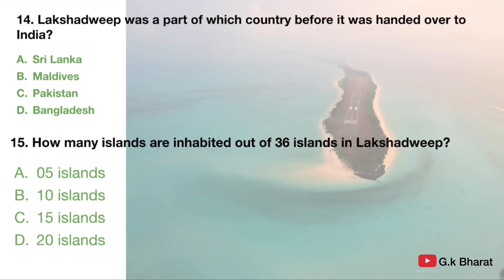Next. How many islands are inhabited out of 36 islands in Lakshadweep? Option A: 5 islands. Option B: 10 islands. Option C: 15 islands. Option D: 20 islands. Your correct answer is 10 islands.